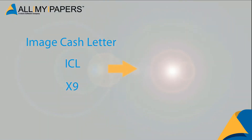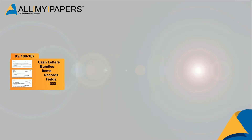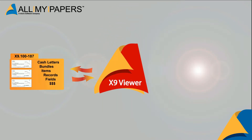The terms image cash letter, ICL, and X9 all refer to any check image data file that conforms to the ANSI X9.100-187 image exchange standard. The X9 Viewer enables you to view, edit, and print image cash letter files.